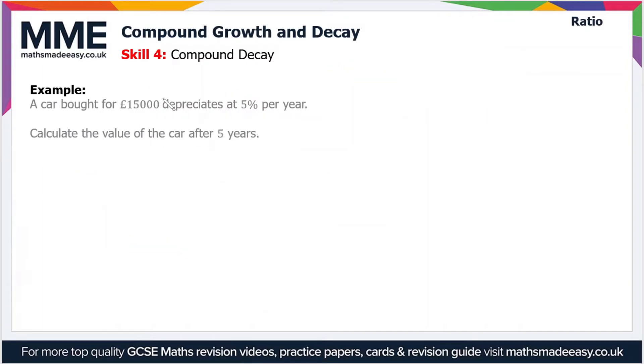So moving on then, let's have a look at compound decay or depreciation as it's sometimes called. So in this example, a car is bought for £15,000 and depreciates at 5% per year. Calculate the value of the car after 5 years.